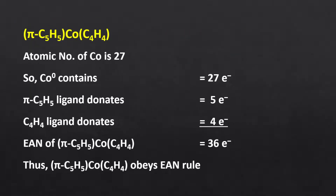In this complex, the atomic number of cobalt is 27 and there is no charge on the complex, so the oxidation state of cobalt is 0. Cobalt will contribute 27 electrons. Thus, 27 electrons from cobalt, 4 from cyclobutadiene, and 5 from cyclopentadienyl. Consequently, the effective atomic number of this complex is 36 and it is a stable complex.